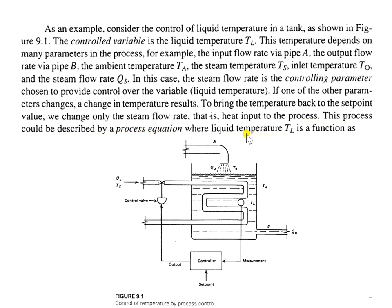What we can understand from this example is that in one simple process like this, we can have many parameters. For example, T0, QA, TA, QB, QS, and TS. All these parameters affect the value of TL.